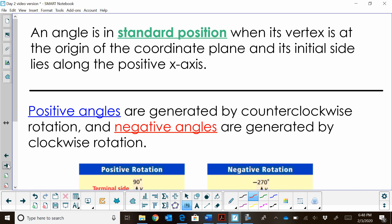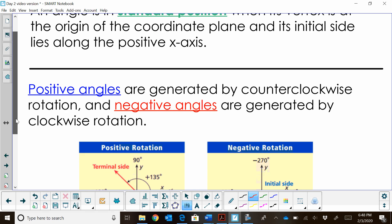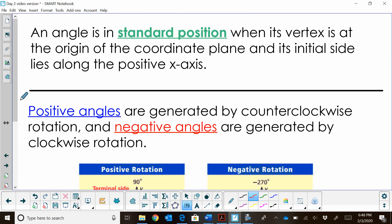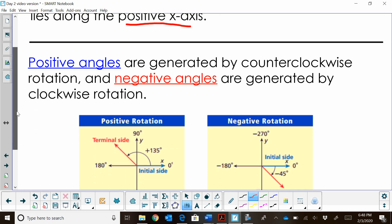Now I have one more slide to show you about standard position and positions in the unit circle. So a standard position is when its vertex is at the origin, which is what we've been drawing. Its initial side lies on the positive x-axis, which is what we've been drawing.